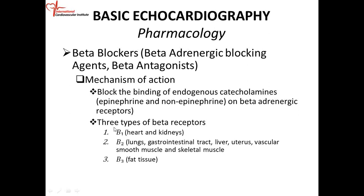There are three types of beta receptors. Beta-1 is mainly in the heart and kidney. Beta-2 is in the lungs, gastrointestinal tract, liver, uterus, vascular smooth muscle, and skeletal muscle. Beta-3 is in fatty tissue. Stimulating beta-1 receptors increases heart rate and contractility. In the lungs, stimulating beta-2 receptors causes bronchodilatation — which is why beta-2 agonists treat asthma, causing dilatation of the bronchioles.